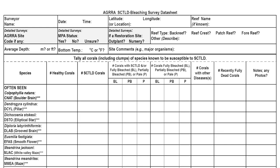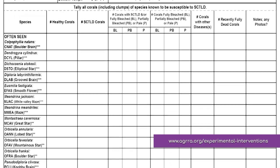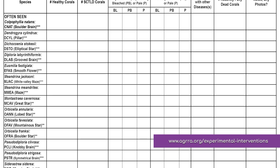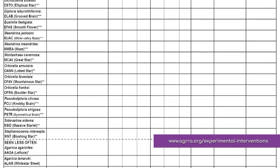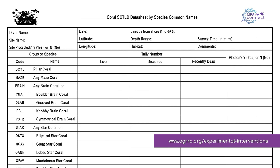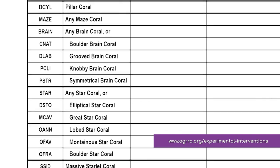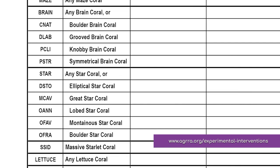One of the AGRA data sheets uses four-letter codes for the corals and is also for bleaching monitoring. It can be used by AGRA-trained surveyors and anyone who knows corals by their scientific names. The other, simpler version of the data sheet uses common names for the corals. It's available in English, Spanish, and French. This data sheet is intended for use by volunteers, community researchers, and staff without advanced training. Both data sheets can be found on AGRA's website.